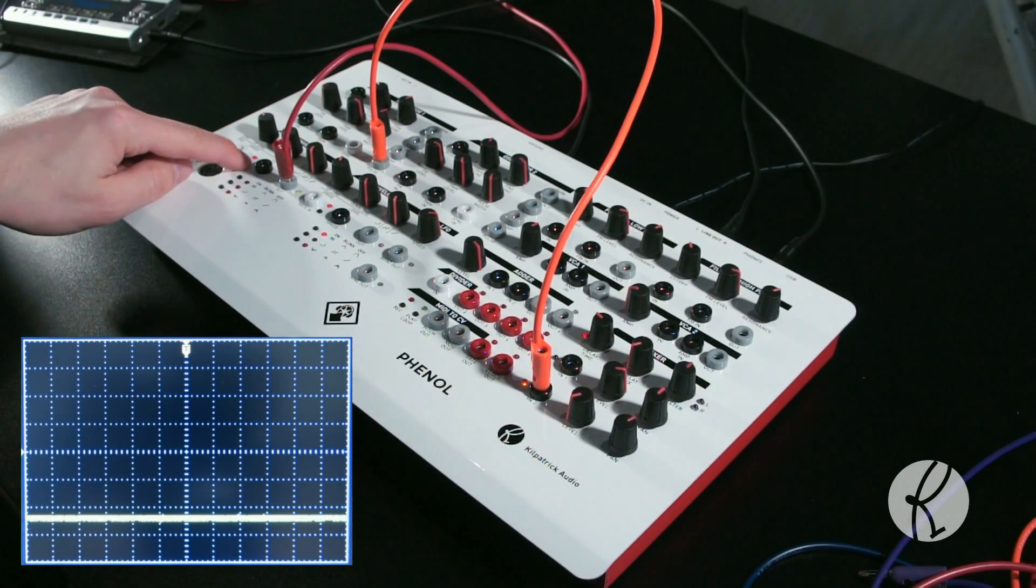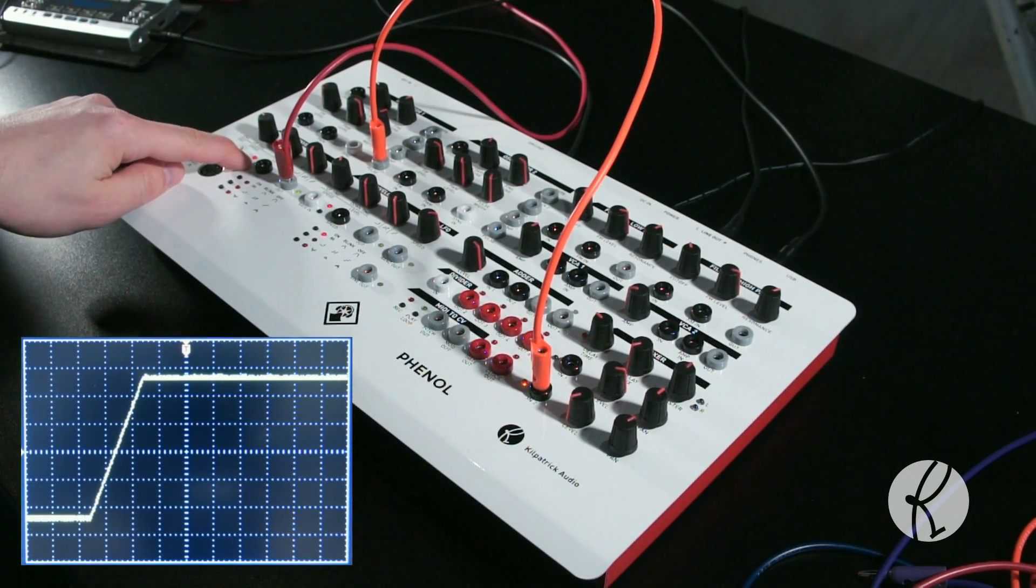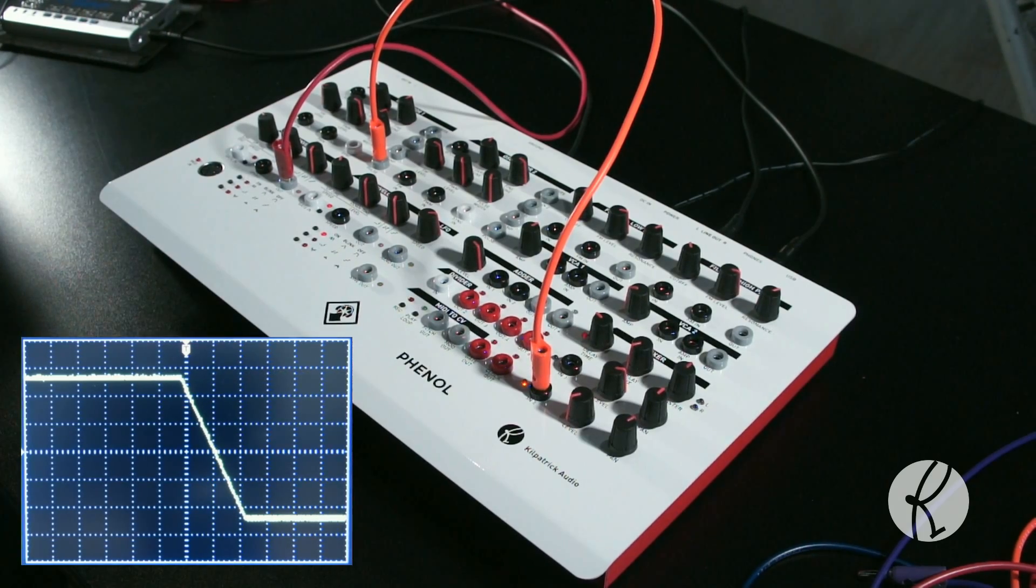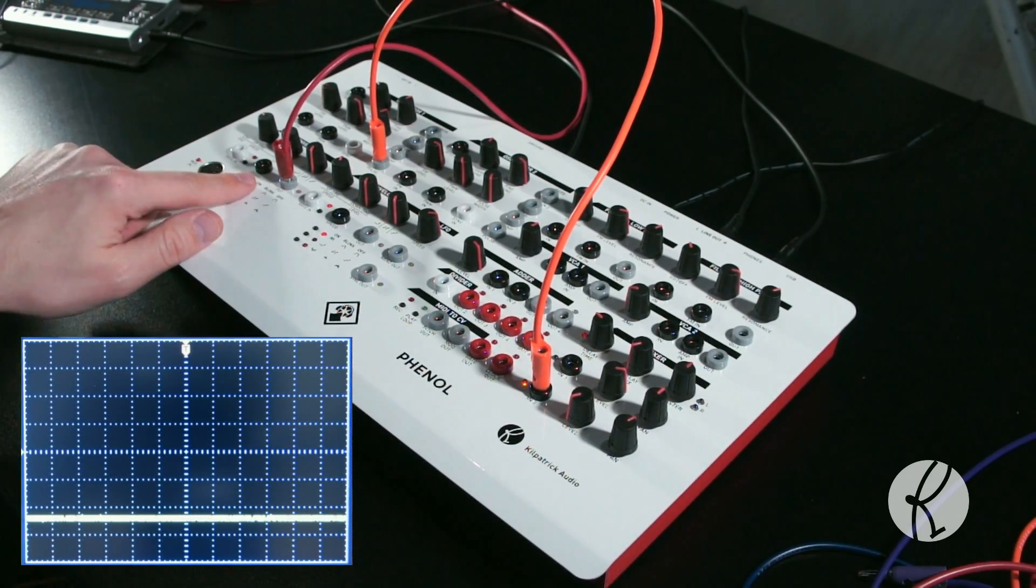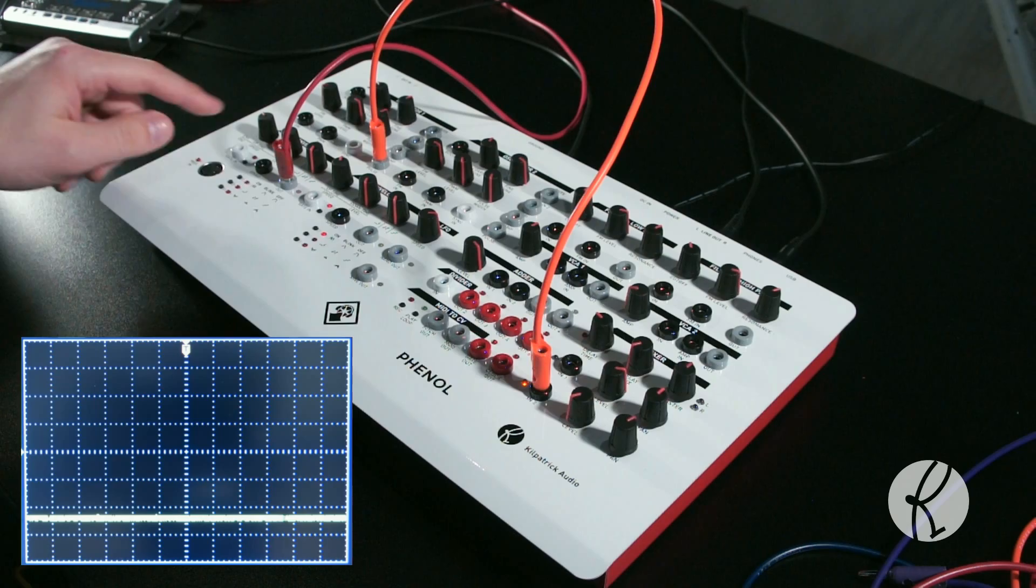There are two envelope generators on Phenol. They are probably the most sophisticated section of the synthesizer because they have a lot of different modes that can be used for various purposes.